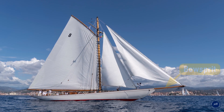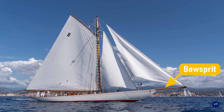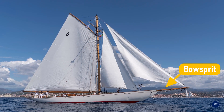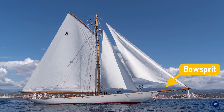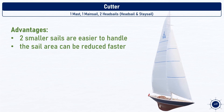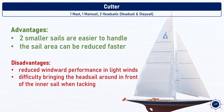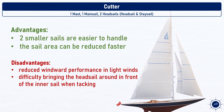The bowsprit is a strong spar firmly attached to a ship's hull and protrudes over the bow, like you see on this classic sail yacht. When the wind increases, the staysail can be lowered to reduce sail area, and the ship will still have good balance. The cutter's disadvantages include reduced windward performance in light winds and difficulty bringing the headsail around in front of the inner sail when tacking.